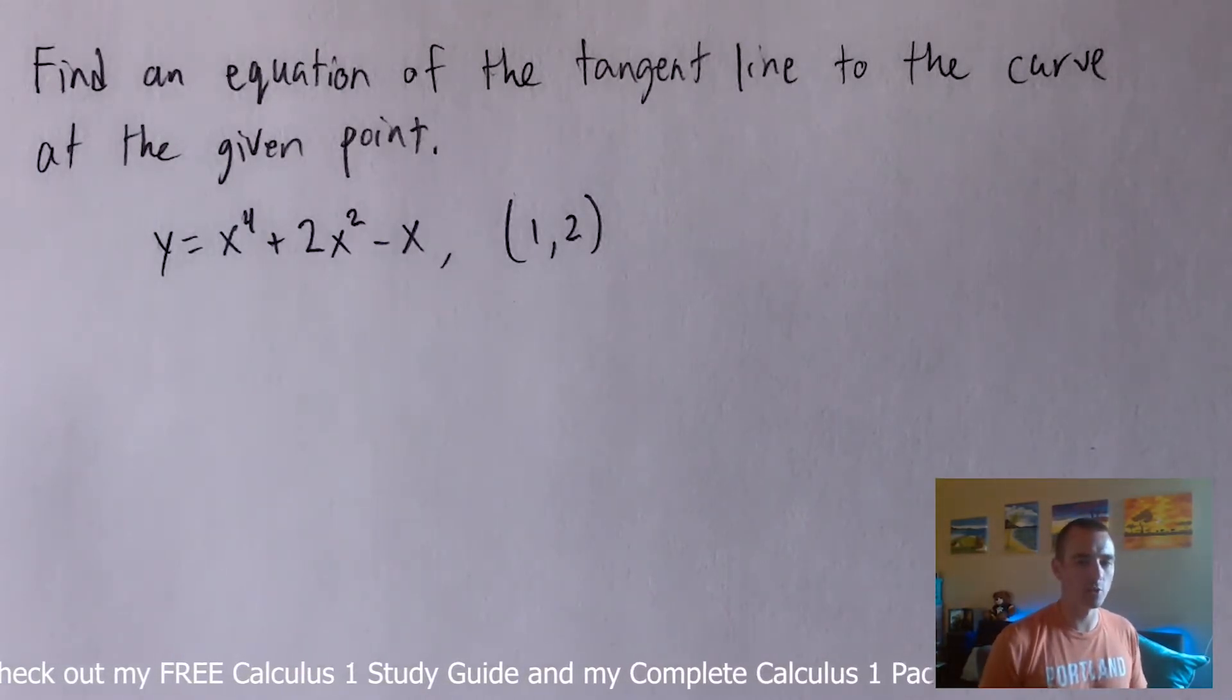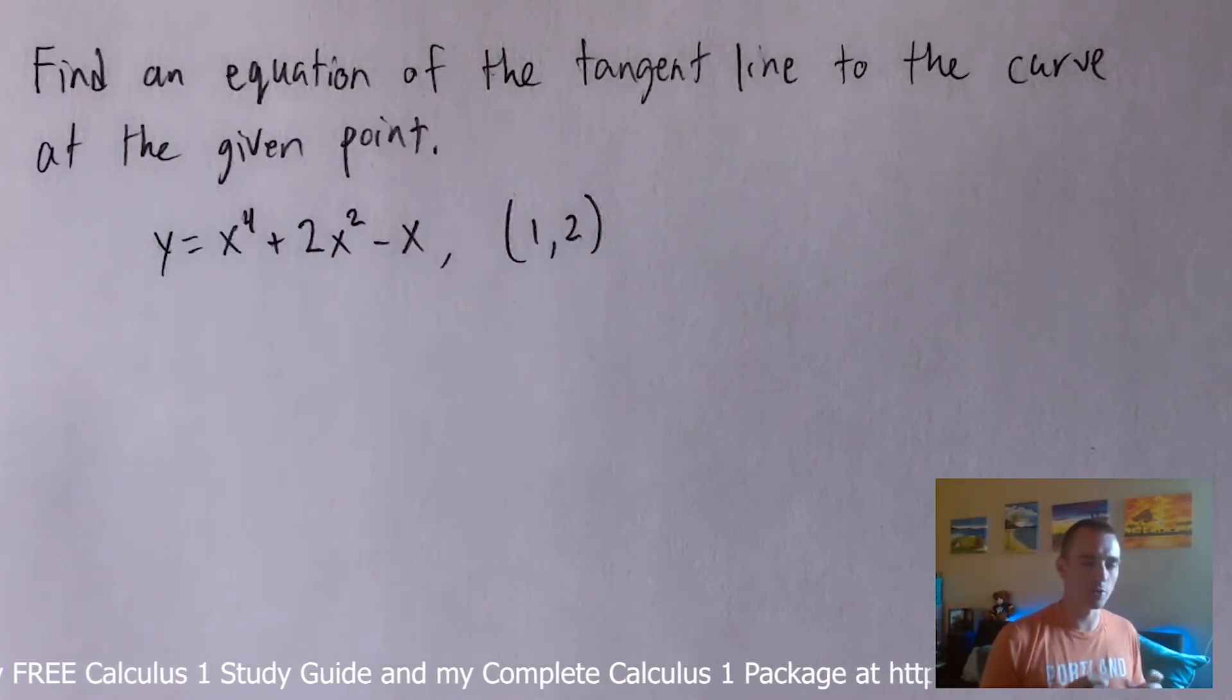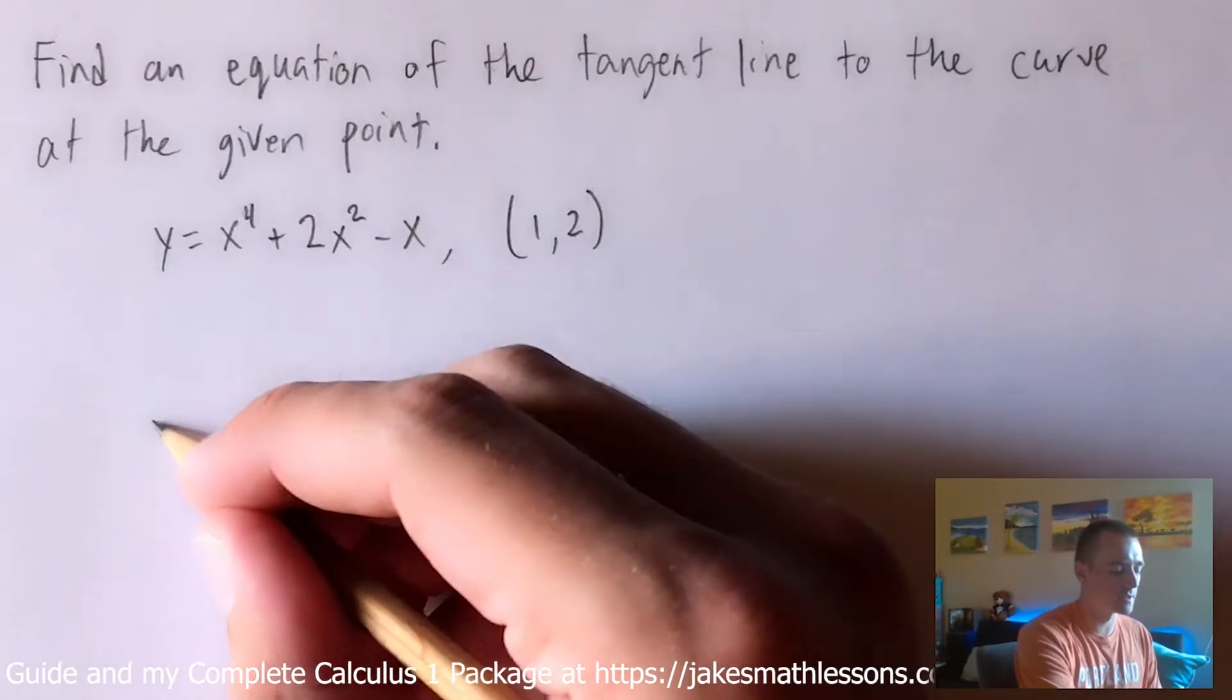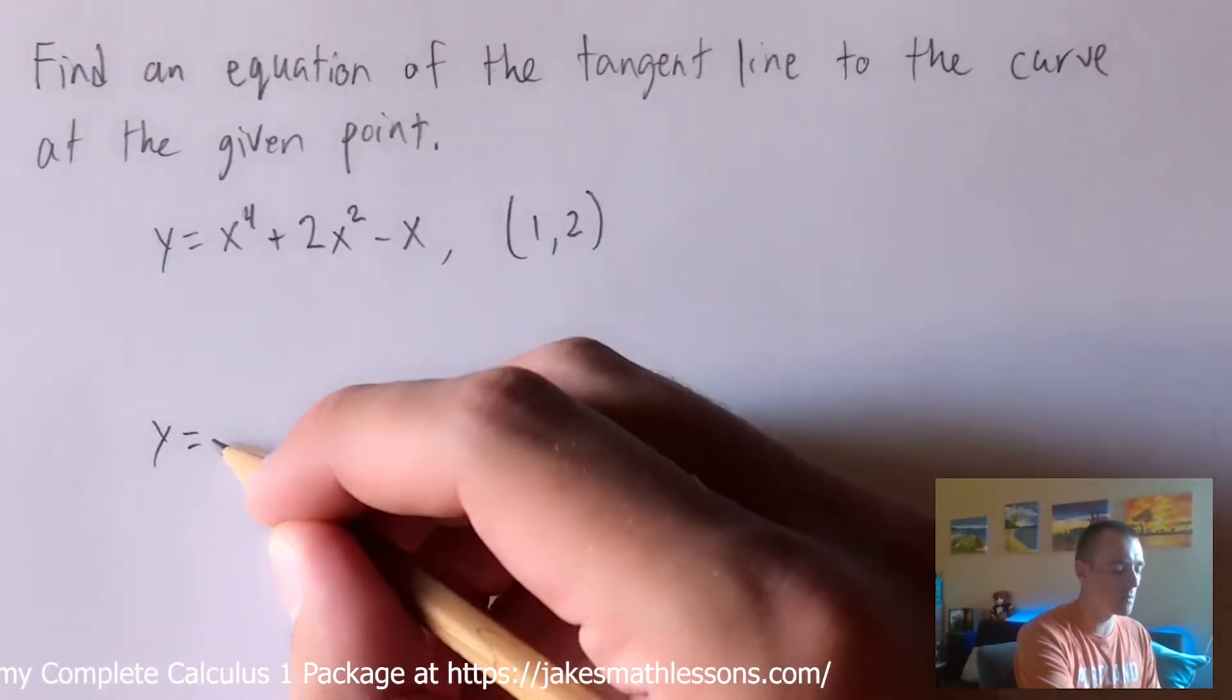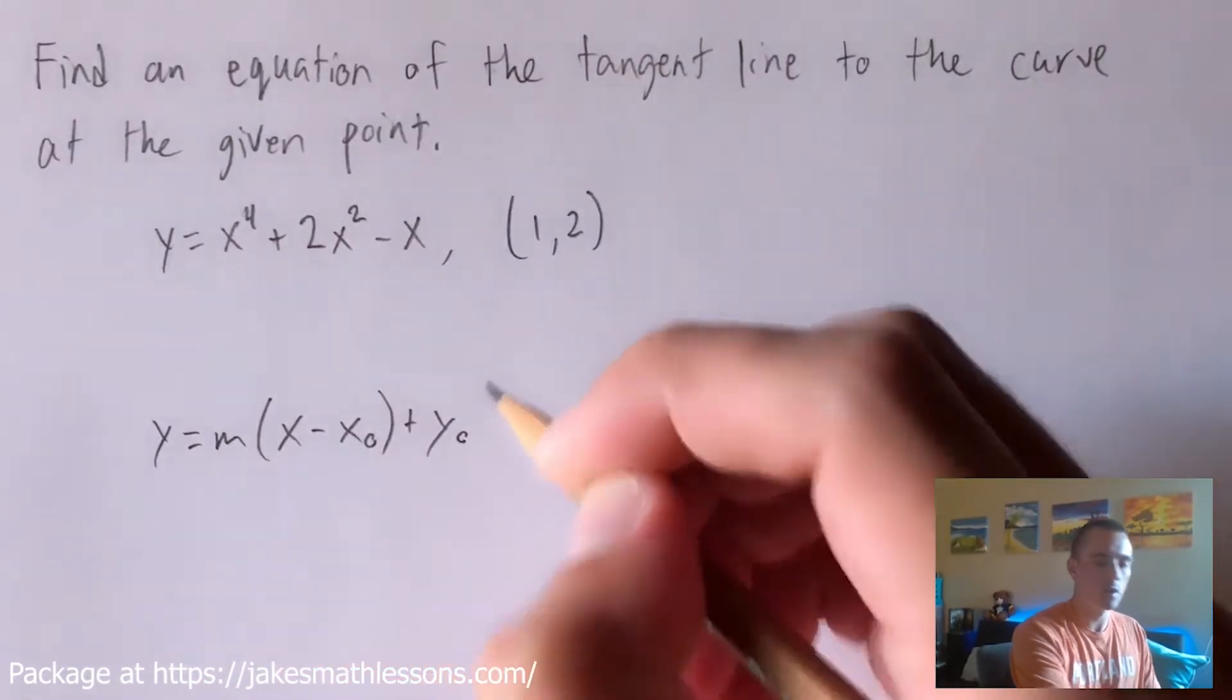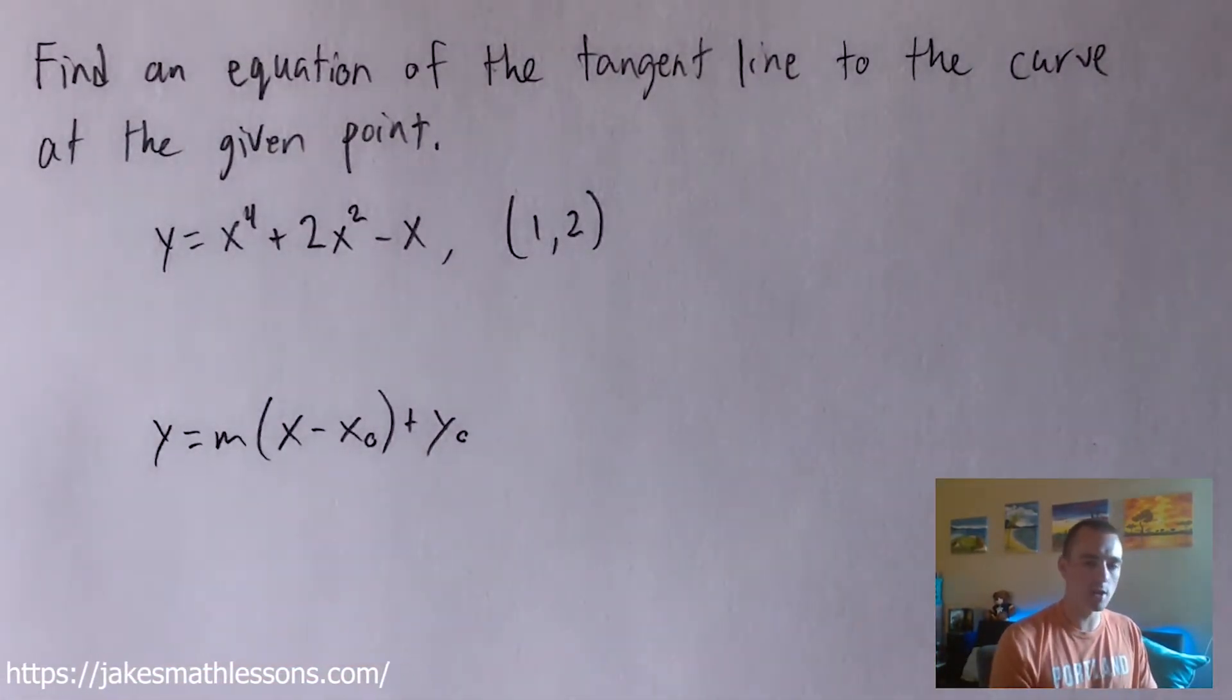Whenever you're doing these tangent line equation problems you always want to start with just the generic form for the equation of a line. So in general a line is going to look something like this: y equals m times x minus x zero plus y zero, where m is the slope of your line and then x zero, y zero is some point that that line goes through.